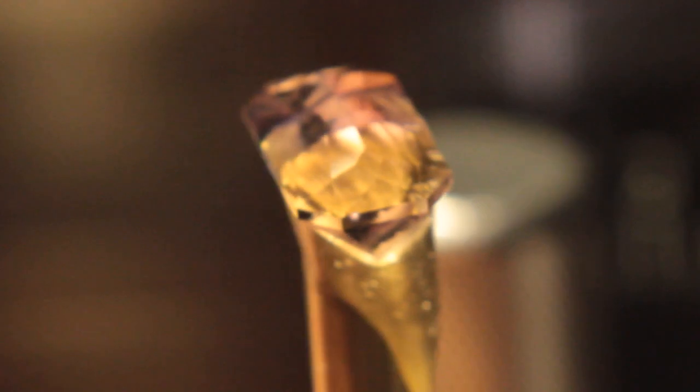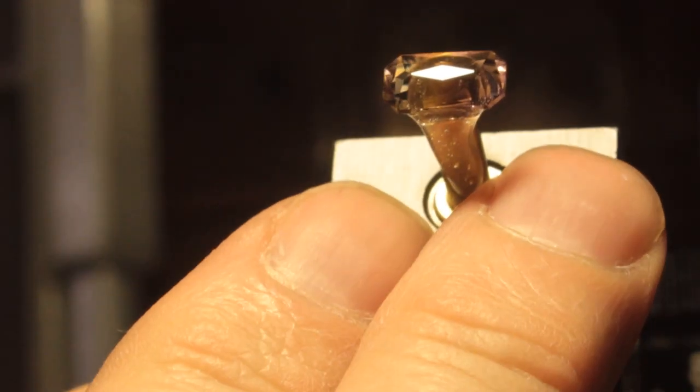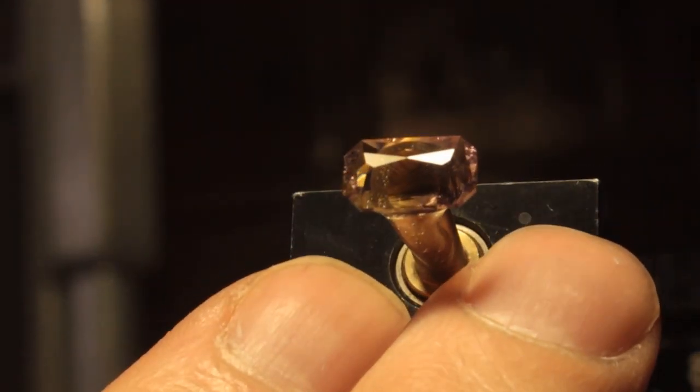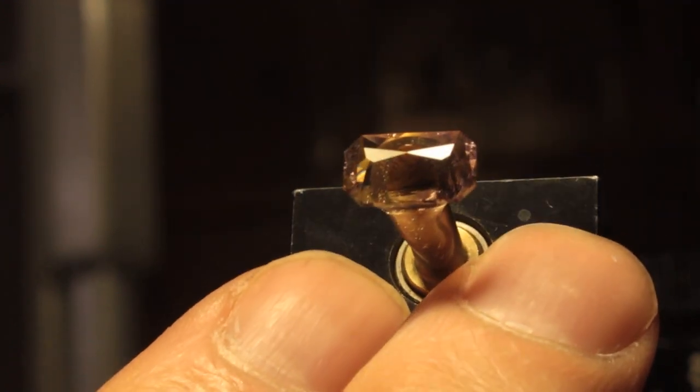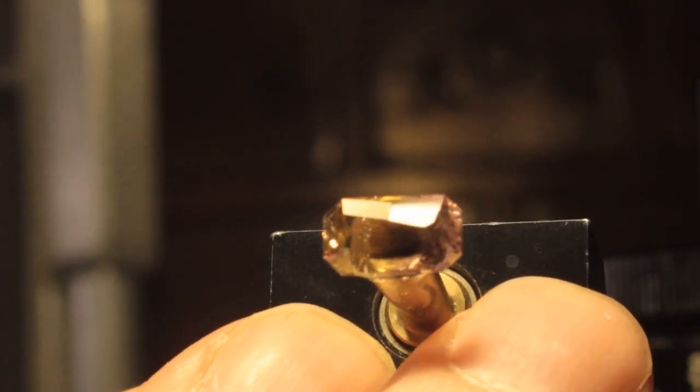I finished polishing the upper half of our fruity candy. So, now I will set up my machine to cut the table and polish the table, and we'll be done. Our fruity candy is done, so I'll soak it in acetone to get the adhesive off the top, and then we'll weigh it and measure it and send it off to Bopey.